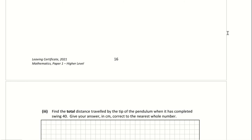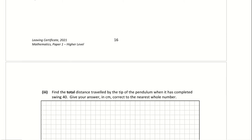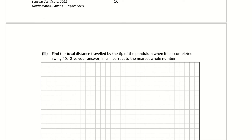Part 3 asks us to find the total distance traveled by the tip of the pendulum when it has completed swing 40, to the nearest whole number. We're looking for the sum of all the terms. Going to the log tables on page 22, we use the geometric series formula because it's reducing by a factor of 0.9 each time — not an addition, so we go geometric. The formula is Sn equals A times 1 minus R to the power of N, divided by 1 minus R.